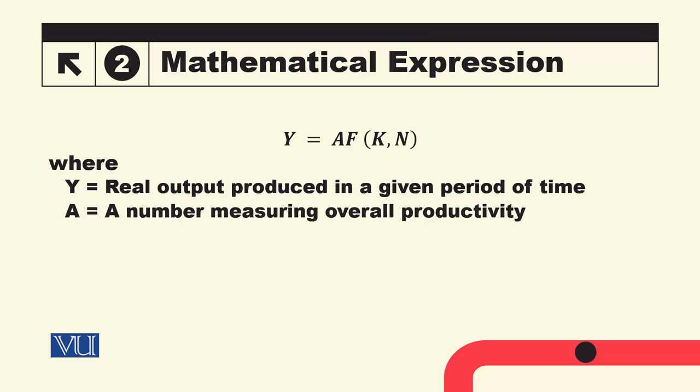A is the number which measures the overall productivity. A represents the state of technology, state of knowledge, efficiency, and how effectively factors of production are being used.